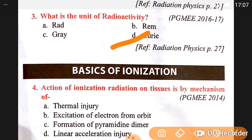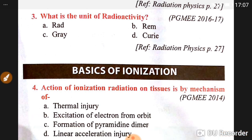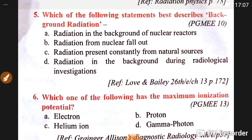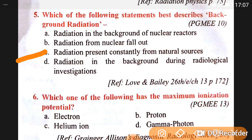Fifth, which of the following statements best describes background radiation? Background radiation is radiation present constantly from natural sources. Sixth, which one of the following has the maximum ionization potential? The maximum ionization potential is that of helium ions.